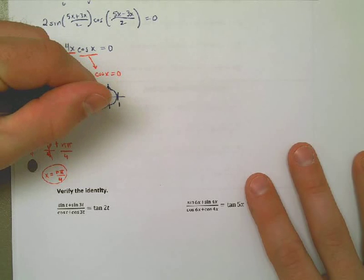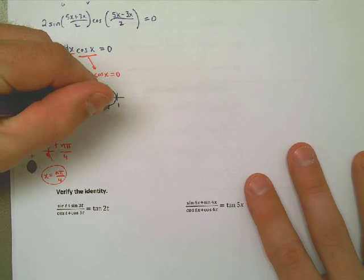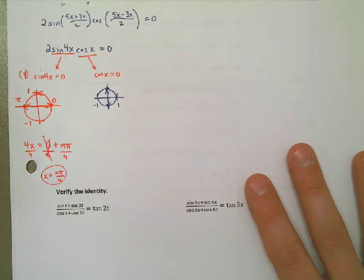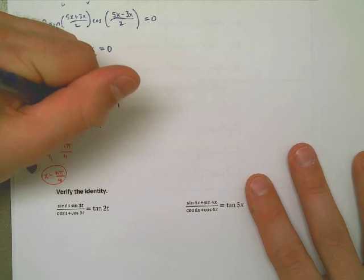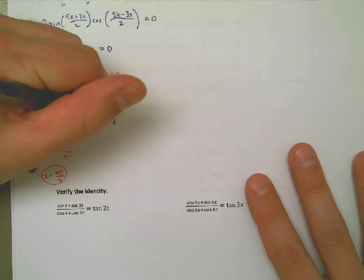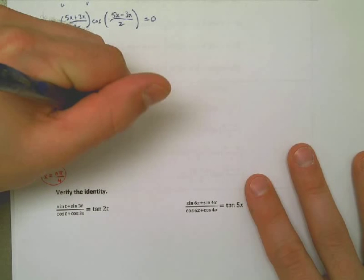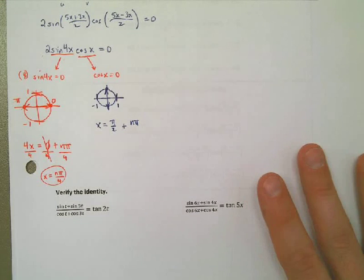Now, that being the case, if this was the second problem, if you didn't give me an interval, I have my two answers. I'm done here. Because it says an interval, I need to come up with the specific values, the specific angles that meet those requirements, being between 0 and 2π.